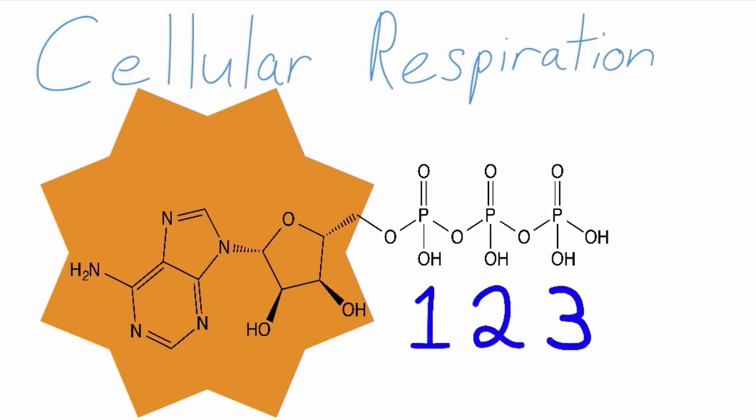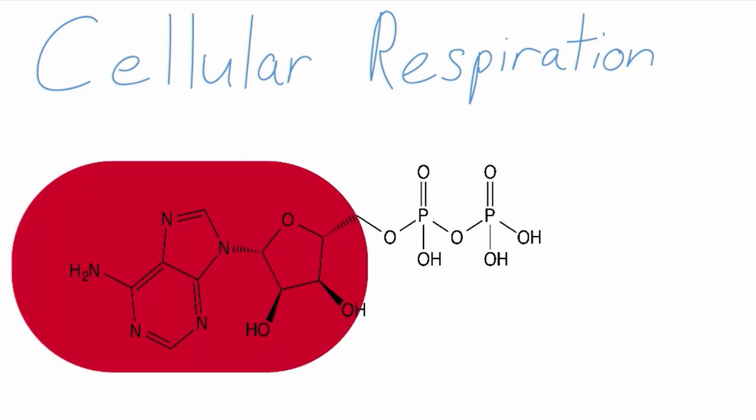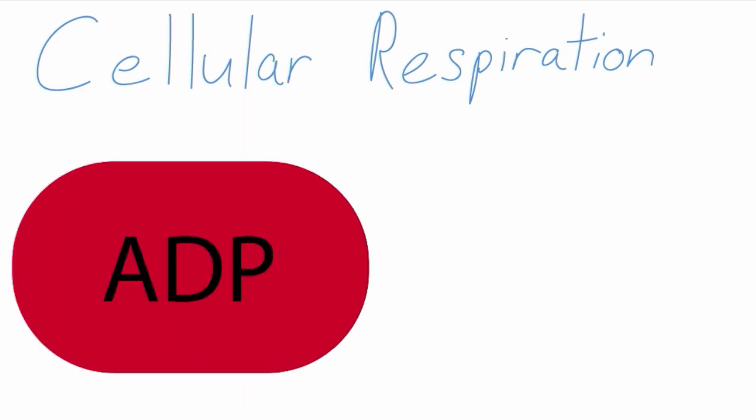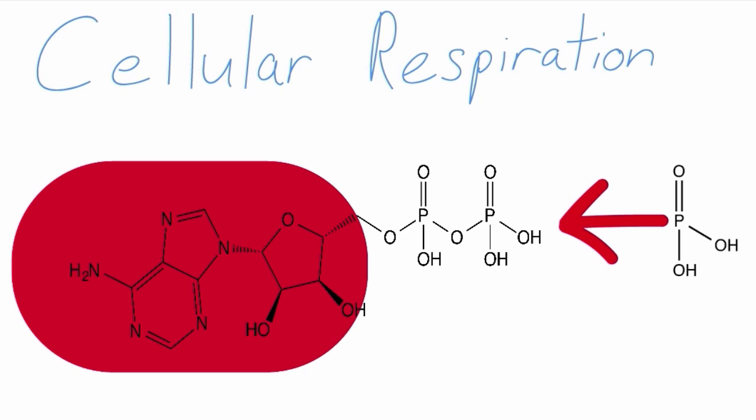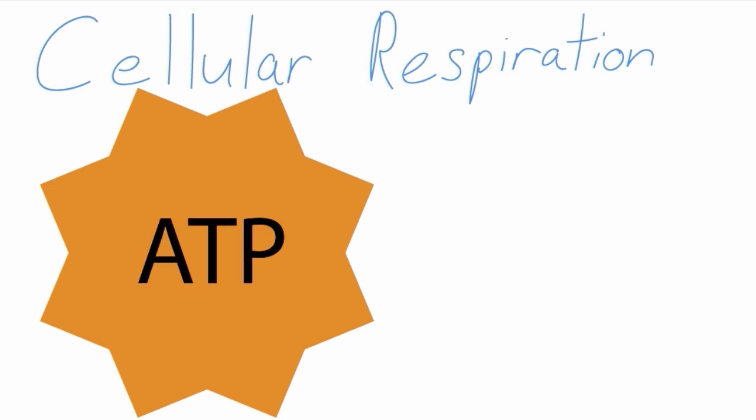ATP contains three phosphate groups, and energy is released when one of the phosphate groups is taken off of this molecule, leaving adenosine diphosphate, or ADP. Cellular respiration turns ADP into ATP by adding back the third phosphate group. This stores energy in the bonds of the molecule, so that the cell can later use this energy to perform its functions.